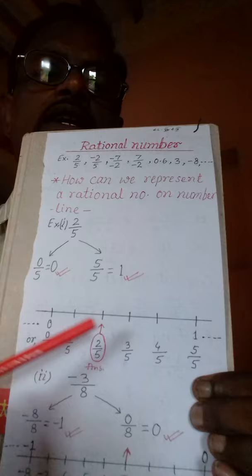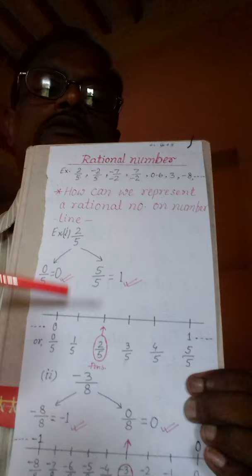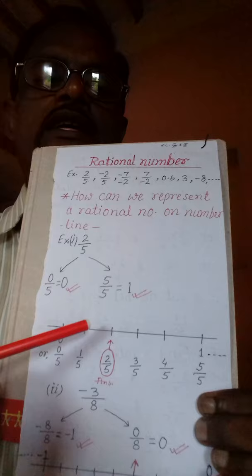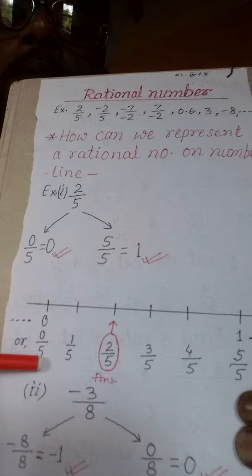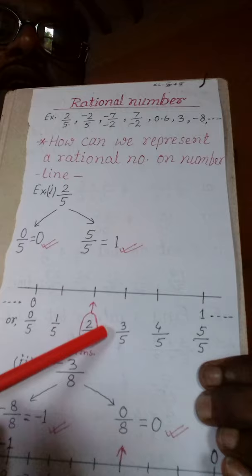अब हम देखेंगे numerator के बीच में हमारा 4 number बच जा रहा है — 1, 2, 3, 4 — तो 4 बच गया, इसलिए इसको 4 बराबर भागों में बाँट लेंगे। किसी दूसरे question में अगर 6 gaping आता है तो 6 बराबर भागों में बाँटेंगे, 10 आता है तो 10 बराबर भागों में बाँटेंगे। यहाँ 4 आ रहा है इसलिए 4 marking किया — 0 by 5, 1 by 5, 2 by 5, 3 by 5, 4 by 5। और हमारा जो number represent करना था 2 by 5, अब वो clearly दिख रहा है — हम इसको circle कर देंगे और arrow भी दिखा देंगे।